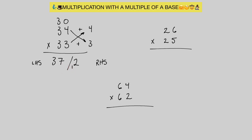Before we carry over this 1, we need to multiply the left hand side by 3, since we're using the multiple of base 30. So 37 times 3: 3 times 30 gives us 90, and 3 times 7 gives us 21. Adding those together we get 111. Now we can carry this 1 over, and we get our answer as 1,122.